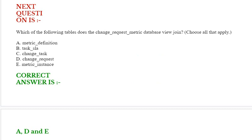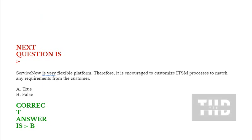Question: Which of the following tables does the change_request_metric database view join? Choose all that apply. Option A: metric_definition. Option B: task_sla. Option C: change_task. Option D: change_request. Option E: metric_instance. Correct answer is Option A, D, and E.